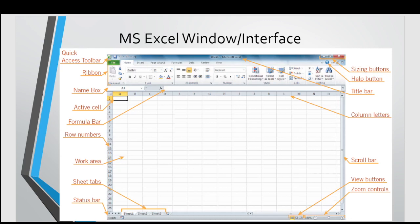There are also sheet tabs. By default, there are three sheet tabs, but we can add more. At the end of the window, there is a status bar that shows the status of the window, and there are scroll bars.